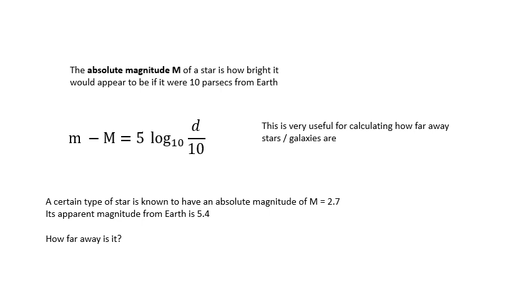Let's do an example now. A certain type of star has an absolute magnitude, big M, of 2.7. Its apparent magnitude from Earth is 5.4. How far away is it? Pause the video. Have a go yourself. The answer is... So I've bunged in the numbers. I've worked it out. 34.6 parsecs, a little bit more than 10 light years.